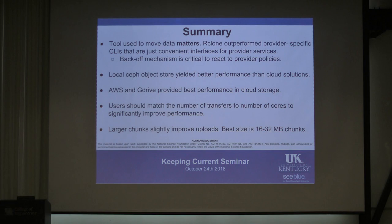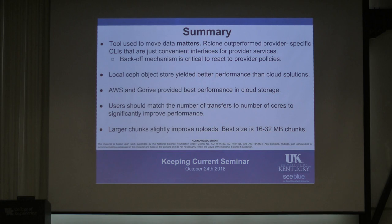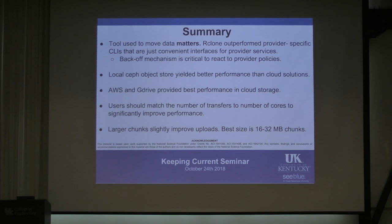The backoff mechanism in the data transfer tool is critical to react to provider rate-limiting policies — that's why we saw Rclone deliver better performance. Rclone supports a growing list of cloud storage providers. When we ran the experiments it supported about 10, but the list keeps increasing. Most of the cloud providers use HTTP; SFTP uses SSH.